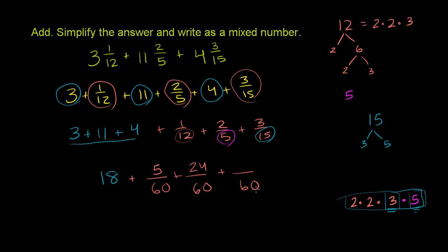For the last one, 15 to 60, you multiply by 4. So in the numerator, 4 times 3 is 12. Now we have the same denominator and are ready to add.